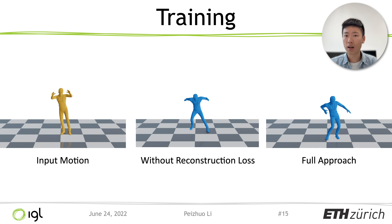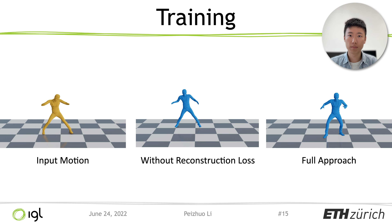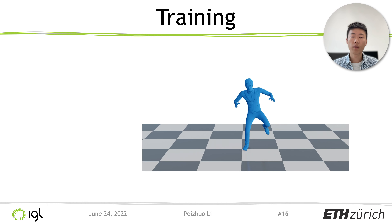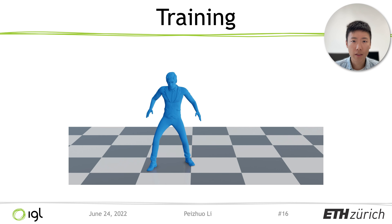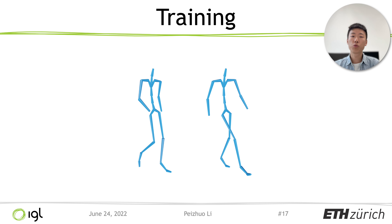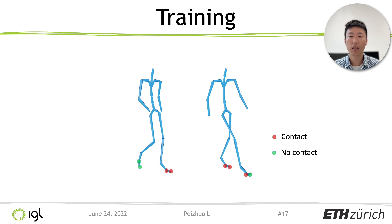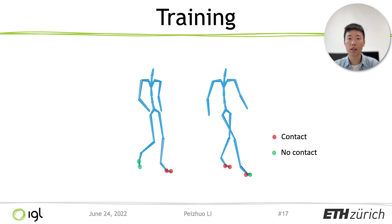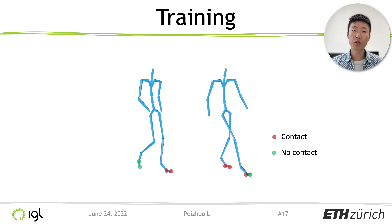The reconstruction loss helps stabilize the generated result, producing less jittering artifacts. With the full approach, we can see there is almost no foot sliding. To achieve such good quality on foot contact, in addition to joint rotation and global velocity, we also append binary foot contact labels for the feet joints as part of the animation representation. These are predicted by the network so that foot sliding artifacts can be fixed in post-processing. The contact labels can be retrieved from the ground truth by setting a threshold on the corresponding joint's velocity.